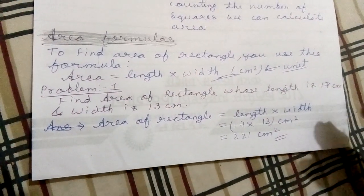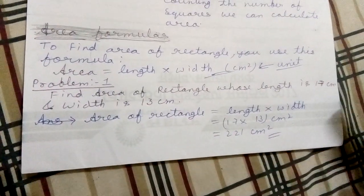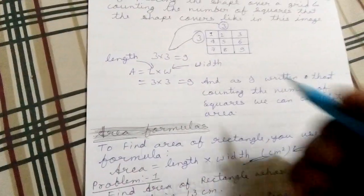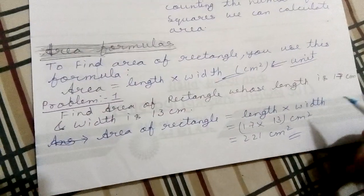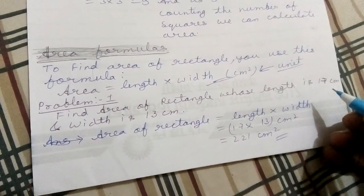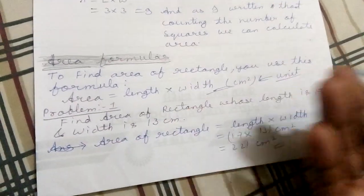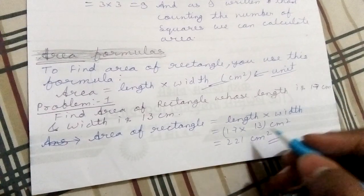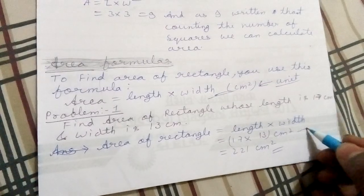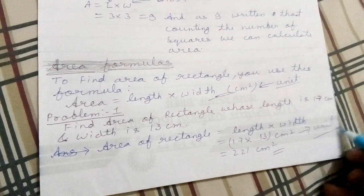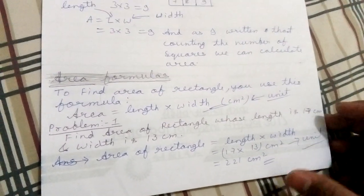Problem 1: Find the area of rectangle whose length is 17 centimeters and width is 13 centimeters. Area of rectangle equals length into width. Length is 17 centimeters and width is 13 centimeters, so 17 into 13 centimeter square equals 221 centimeter square.